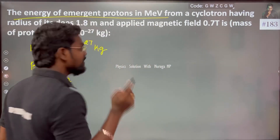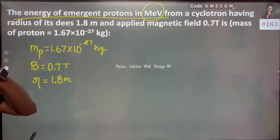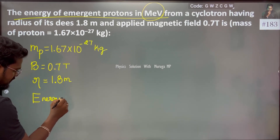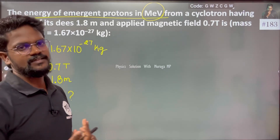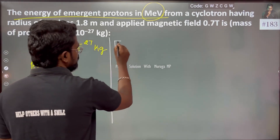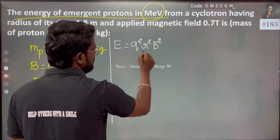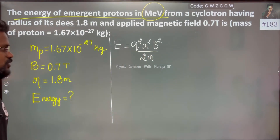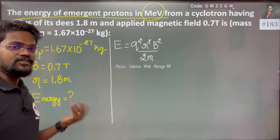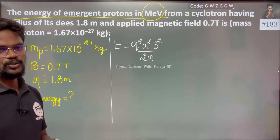The energy of the emergent proton is to be found in mega electron volts. They are asking about the kinetic energy of the moving charged particle. The energy formula is: E = Q²R²B² / 2m. We know the charge, radius, magnetic field, and mass of the proton — all values are known.